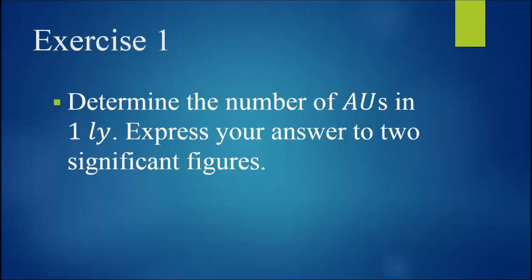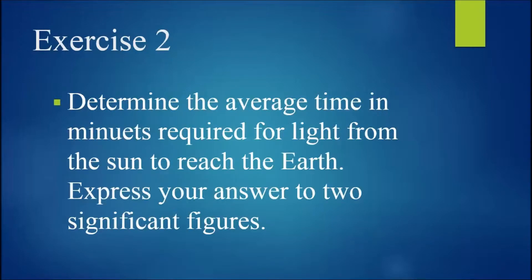As an exercise, determine the number of astronomical units in one light year and express your answer to two significant figures. As a second exercise, determine the average time in minutes required for light from the sun to reach the Earth, and express your answer to two significant figures.